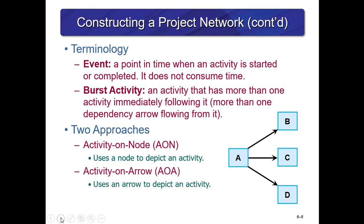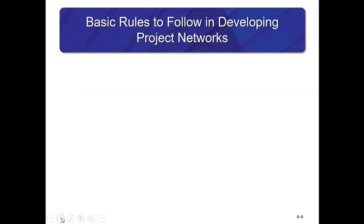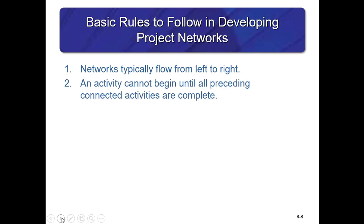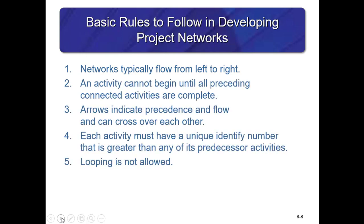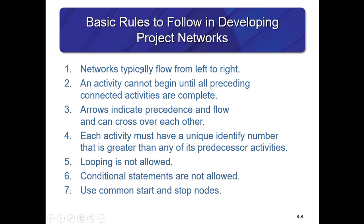Two approaches to creating network diagrams are activity on node and activity on arrow. In this textbook, we focus on activity on node, which uses a node to depict an activity versus using an arrow. Basic rules for developing project networks: networks flow from left to right; an activity cannot begin until all of its preceding connecting activities are complete; arrows indicate precedence and can cross each other; each activity must have a unique identifying number greater than any of its predecessors; looping is not allowed; conditional statements are not allowed; and use common start and stop nodes.